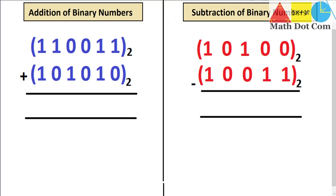When adding two binary numbers, we add bit by bit. A bit means binary digit — one binary digit is either 1 or 0. The answer we get after adding will always be in zeros or ones. We will never get any other number because in binary we only have zero and one. We always start adding bit by bit from right to left.